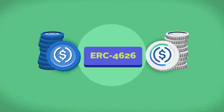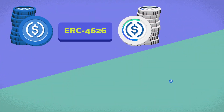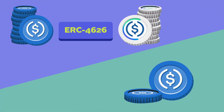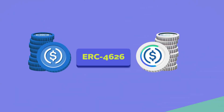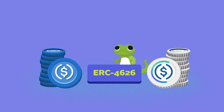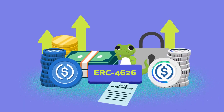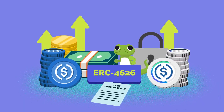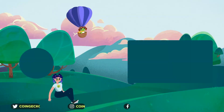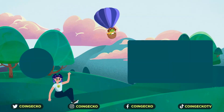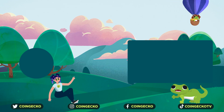ERC4626 provides a standard framework for developing such tokens, rather than each yield token and vault coming up with its own. The benefits include optimizing costs and security, as well as ease of integration between different protocols. Are you familiar with other ERC token standards? Comment any other two below!